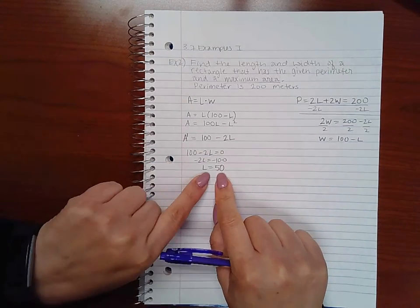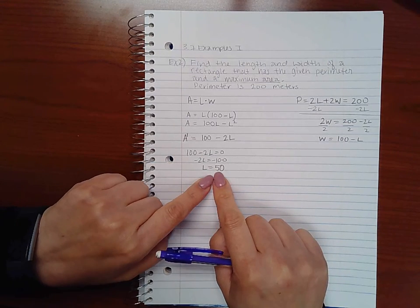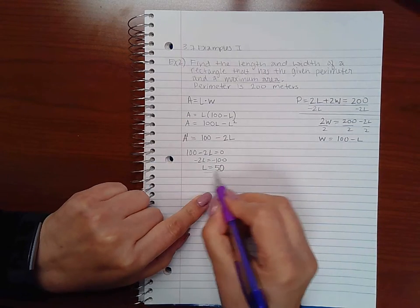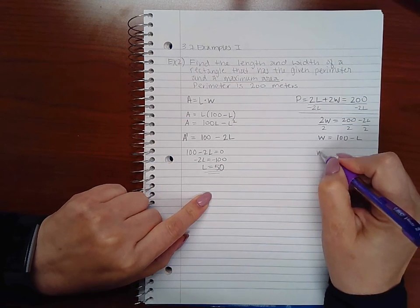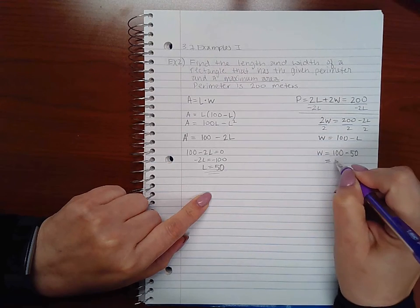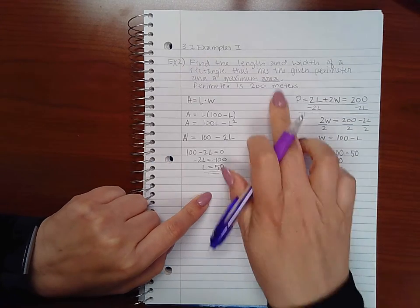And I get that L equals 50. That is a feasible answer for a length. It's not negative and it's not 0, so this is a good answer for L. If I want to know W, I just have to do 100 minus that L, which means W is also 50. And since this was measured in meters...